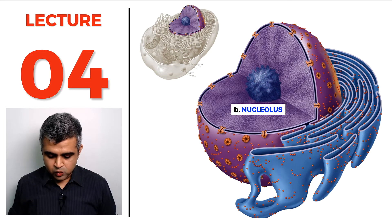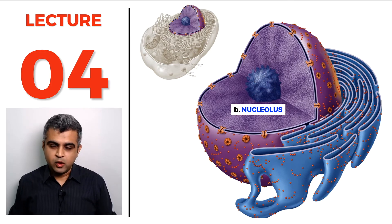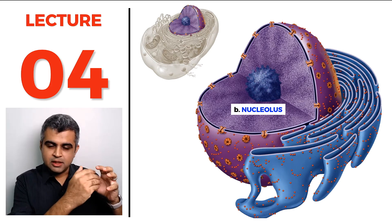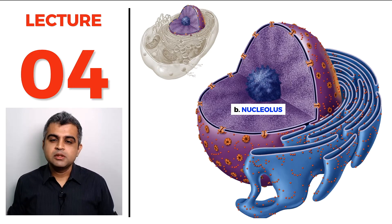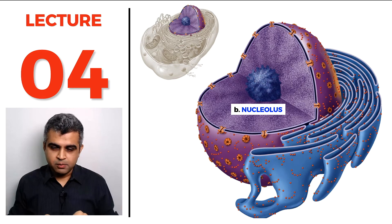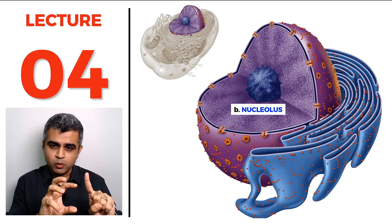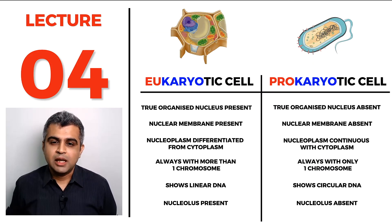The nucleolus is seen only in the eukaryotic nucleus. It is a roughly spherical body without any membrane, so its components are continuous with the nucleoplasm. The nucleolus helps in protein synthesis, and in cells actively doing a lot of protein synthesis there will be multiple nucleoli. So the nucleus has a nuclear envelope, and within it the nuclear matrix has two components: chromatin and the nucleolus.